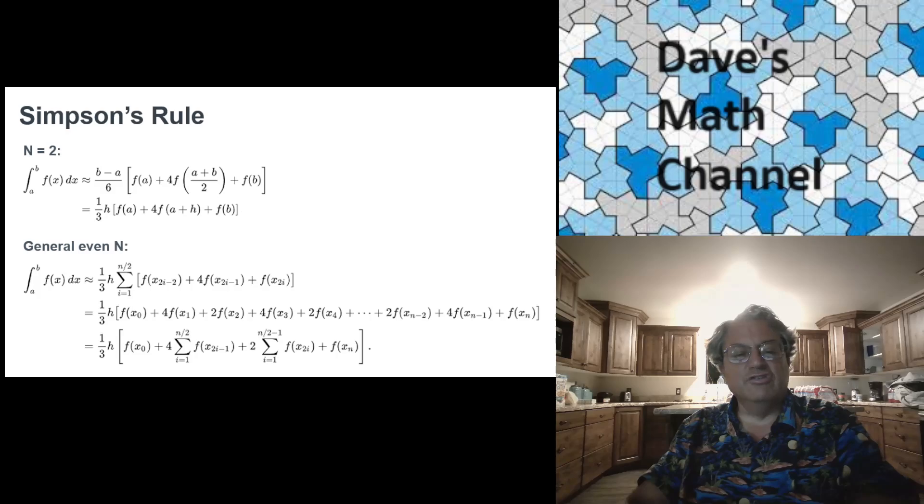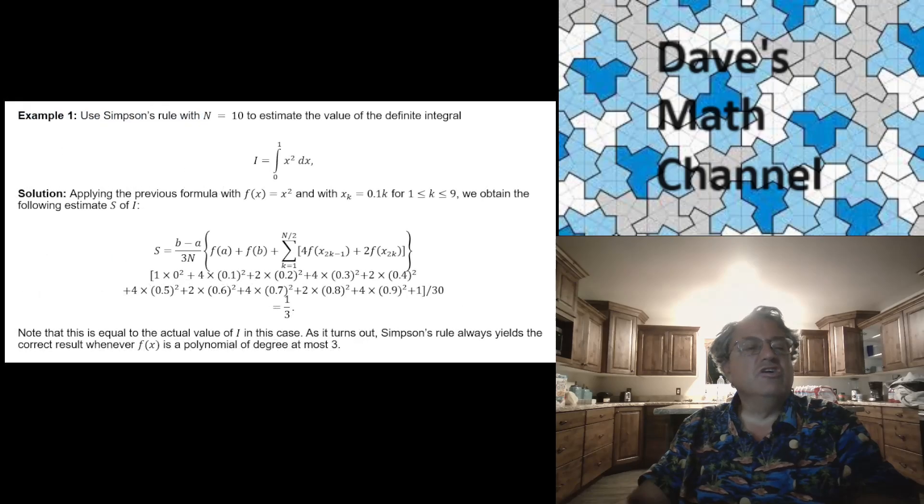And it's not really all that much more complicated than the midpoint rule. The coefficient's a little more complicated, but it's just as easy to apply. If you want to write a computer program to do this, it's really no more work than doing the midpoint rule. But it gives you a much more accurate estimate in general. And I'm just going to do a couple examples here. So I'm going to do the same two examples I gave last time when I was talking about the trapezoid rule.